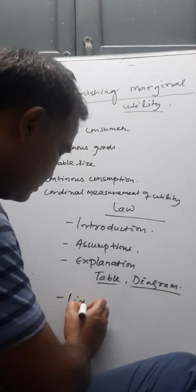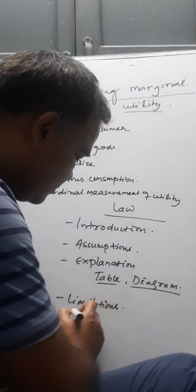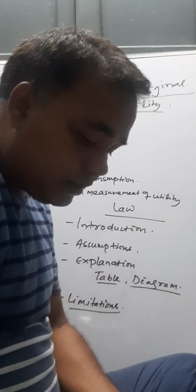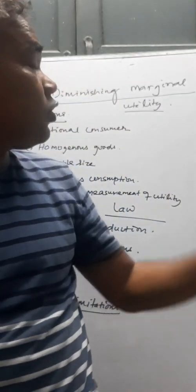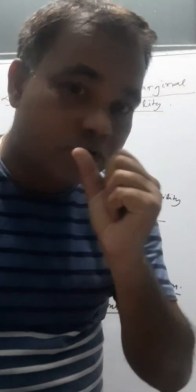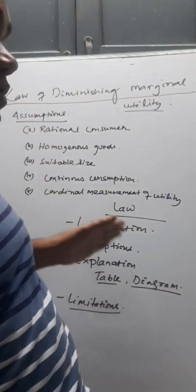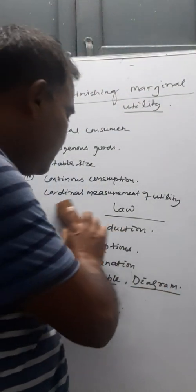The last one is limitations. We have already discussed the introduction of the law of diminishing marginal utility. This law is based on five assumptions. The first one is a rational consumer.